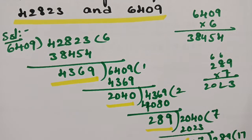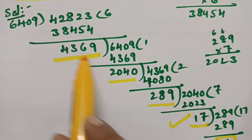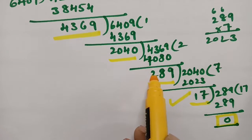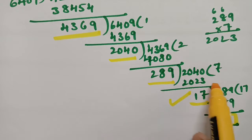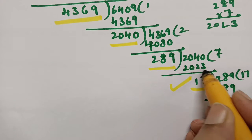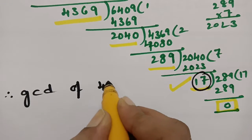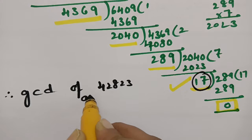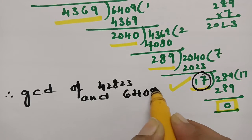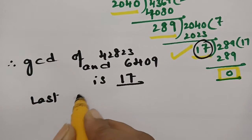We divide like this, bring the result down, and make another division — bringing 2040 down and dividing again — until finally we get 0 as the remainder. The last non-zero remainder is the GCD. Therefore, the GCD of 42823 and 6409 is 17, which is the last non-zero remainder.